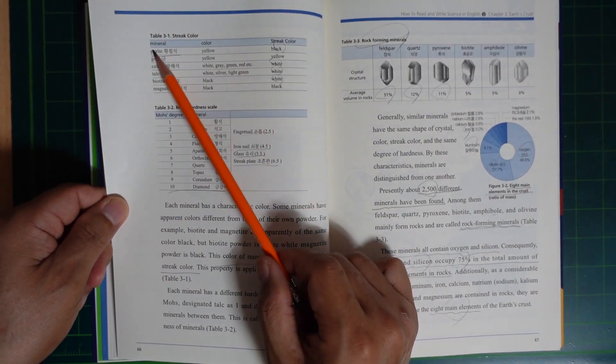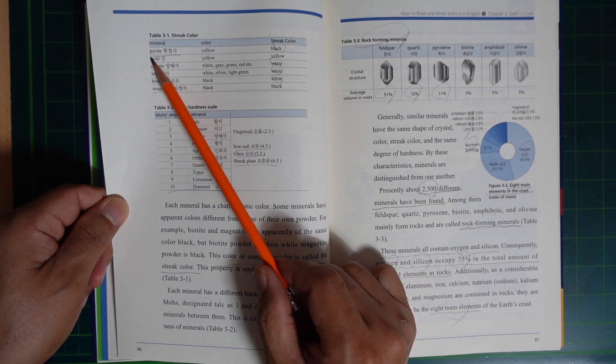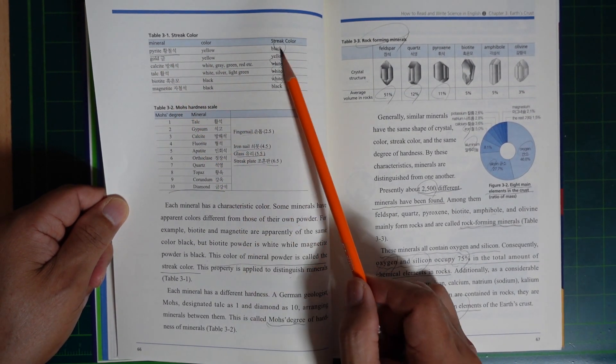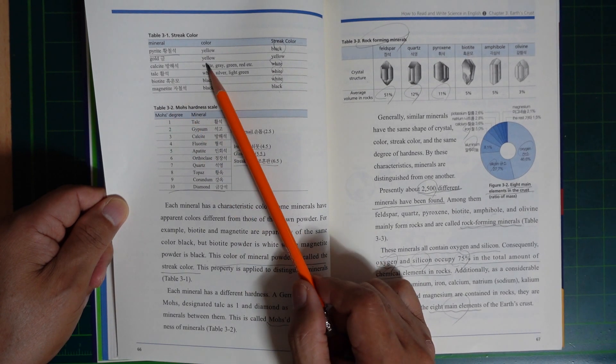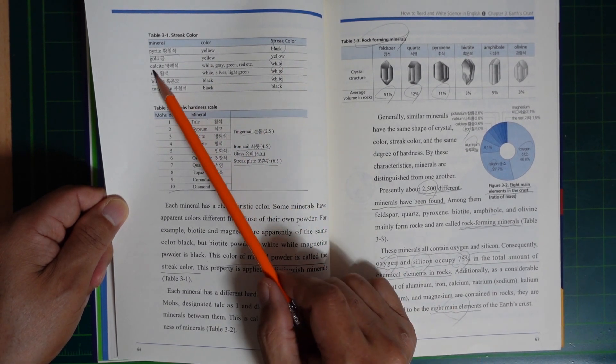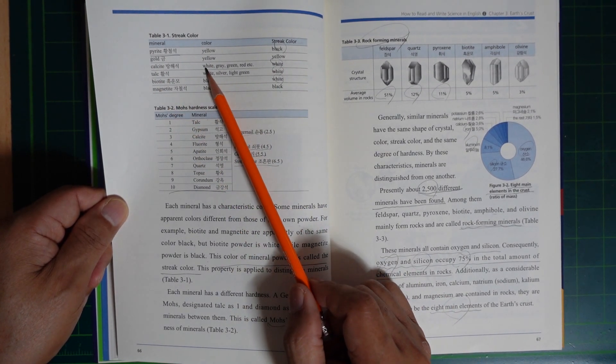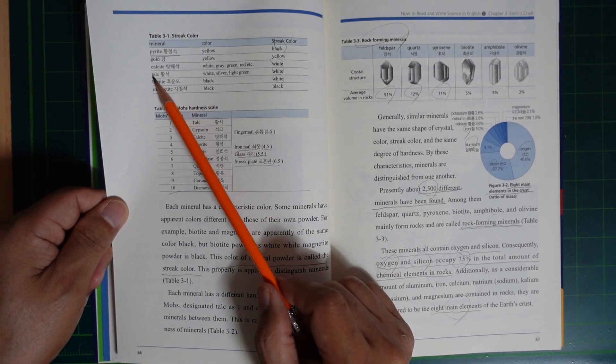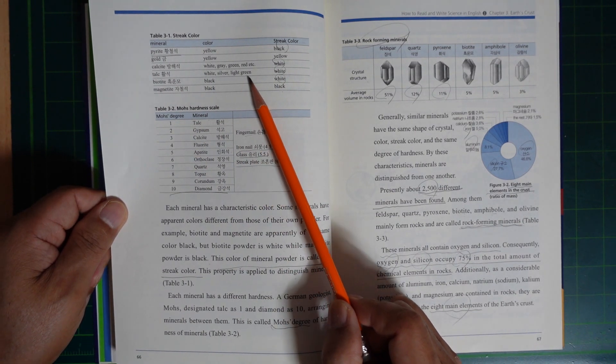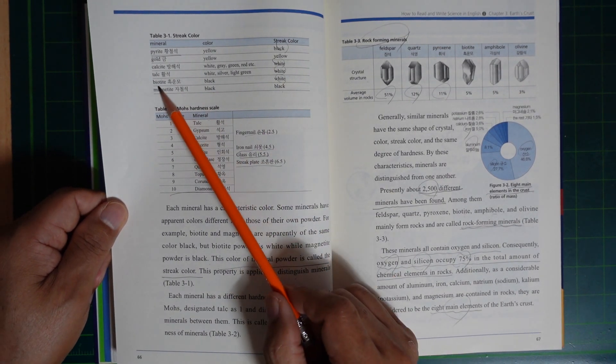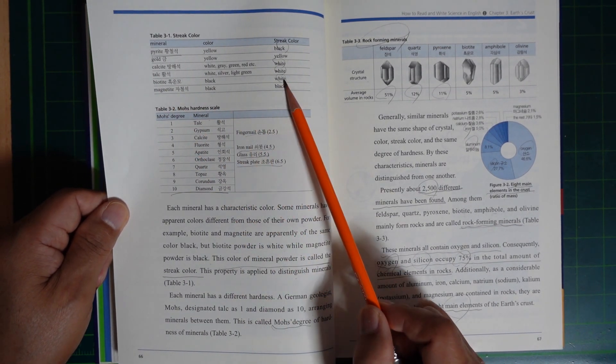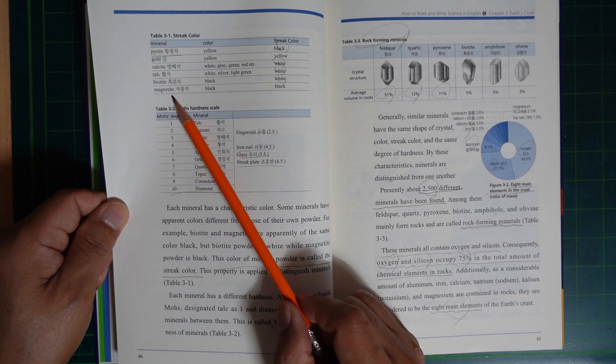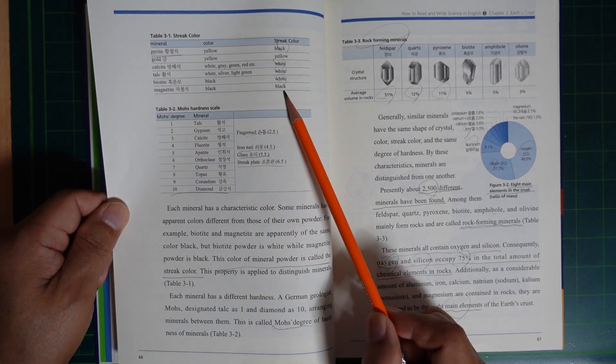Streak color: mineral color and streak color. Pyrite is yellow with black streak. Gold is yellow with yellow streak. Garnet is white, gray, green, red, etc., with white streak. Talc is white, silver, bright green with white streak. Biotite is black with white streak. Magnetite is black with black streak.